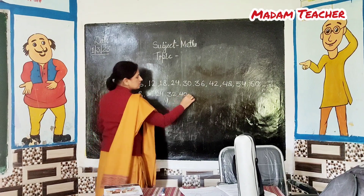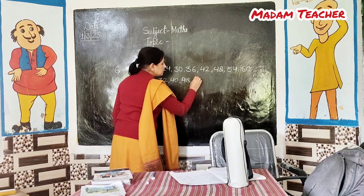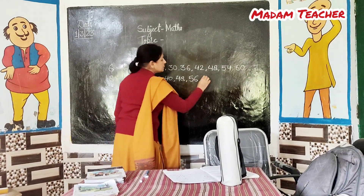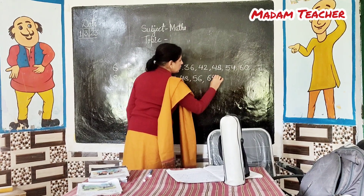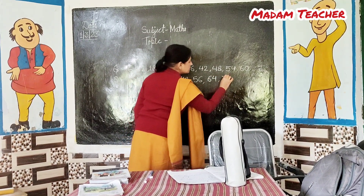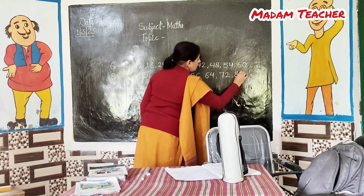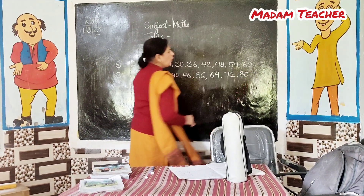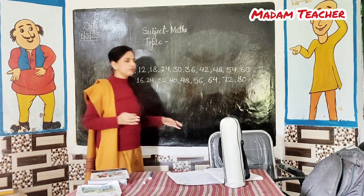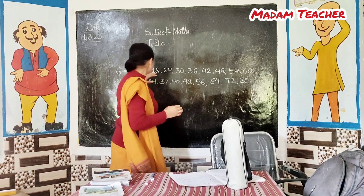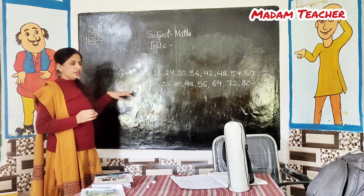Very nice. 8 sixes are 48. 8 sevens are 56. 8 eights are 64. 8 nines are 72. Everybody look at the blackboard — tables of 6 and 8 are here.